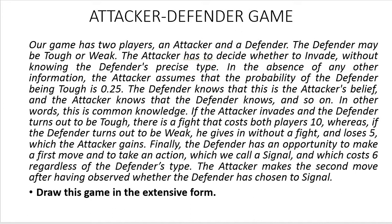If the attacker invades and the defender is weak, attacker gets a payoff of +5 and defender gets -5. If attacker invades and defender is tough, both players lose 10. The problem is that attacker is unable to identify the exact type of the defender — attacker only knows there is a 25% probability of a tough defender and 75% probability of a weak defender. Both defenders regardless of type can signal, and the cost of signaling is identical for both types: negative 6.